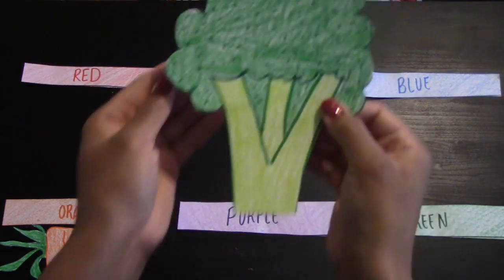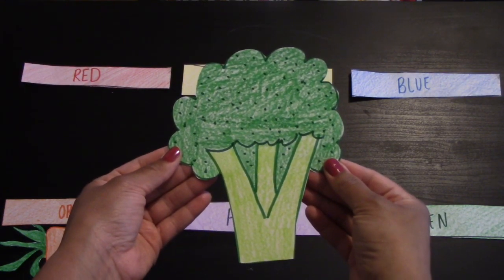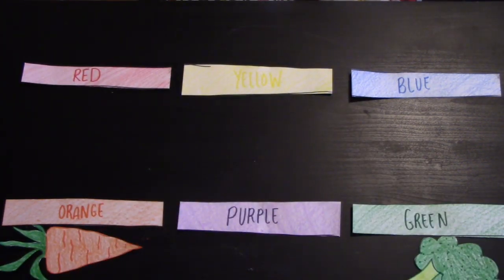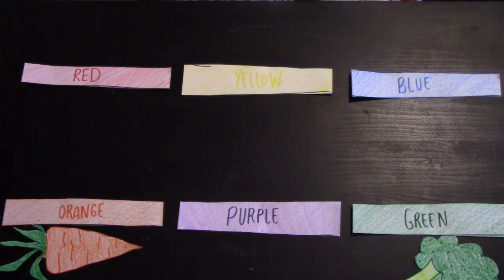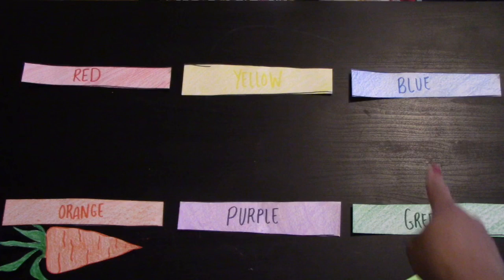What color is the broccoli? Green. The broccoli is green. Yellow and blue make green.